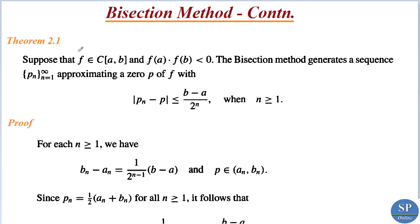Now we have Theorem 2.1: suppose that f belongs to C[a,b] such that f(a)·f(b) < 0, that is f belongs to the set of all real continuous functions on interval [a,b] and f(a) and f(b) are of opposite signs. Then the bisection method generates a sequence pn for n = 1 to infinity approximating a zero p of f, with |pn - p| ≤ (b - a) / 2^n when n ≥ 1.